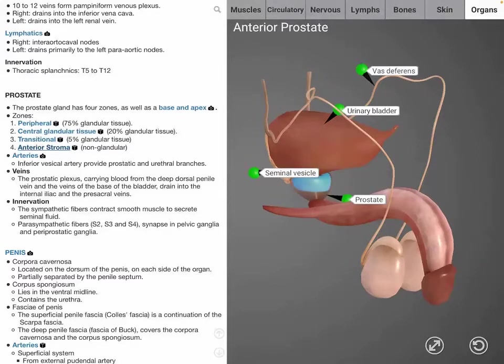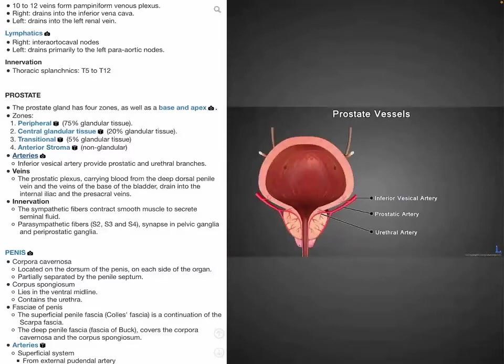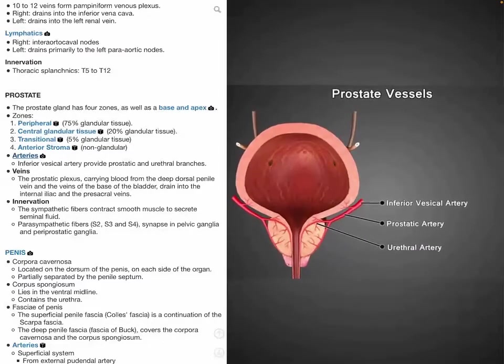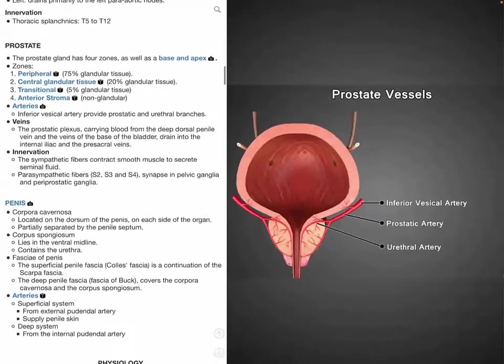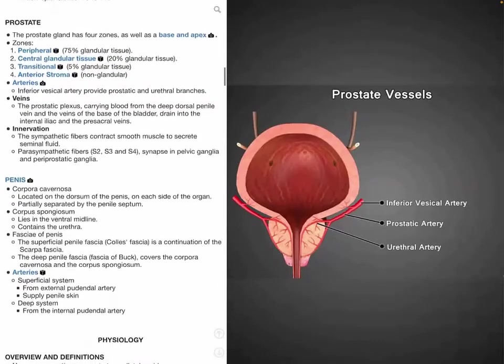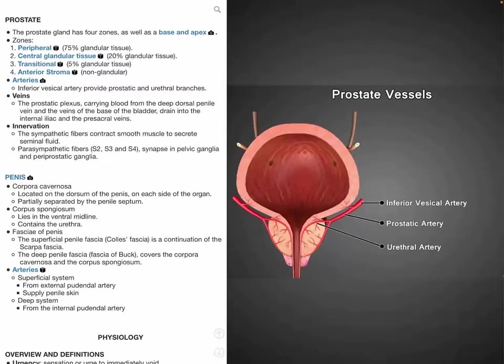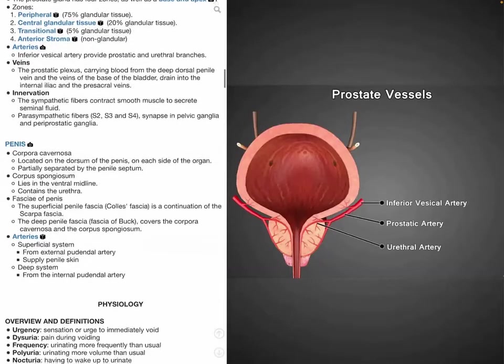The prostate is supplied blood through the inferior vesicle artery, and it drains into the prostatic plexus, which drains into the vesicle and internal iliac veins. Sympathetic activation contracts the smooth muscle of the prostate gland to secrete seminal fluid, and the parasympathetic fibers originate from S2 to S4.